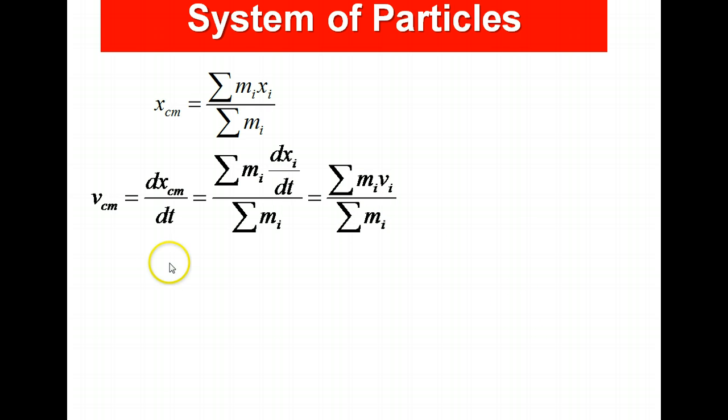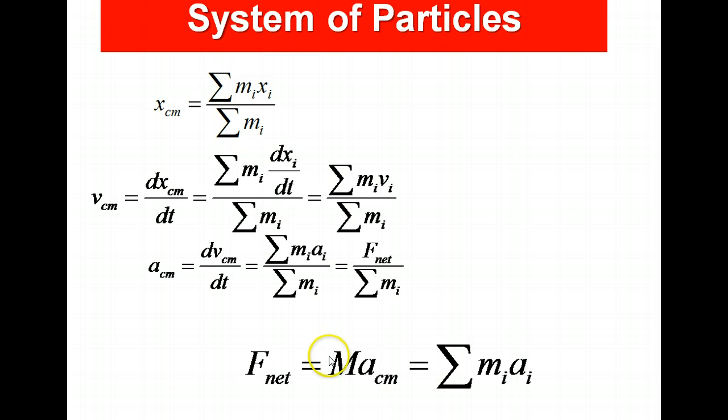I'm going to take the derivative again of both sides of the equation with respect to t. When I take dvcm dt, that will give me the acceleration of the center of mass. The derivative gives me m sub i a sub i, and this quantity, summation of m sub i a sub i, gives me the net force. So I get that acm is equal to the net force divided by the summation of the masses. I'm just taking this equation and I end up with an equation like this, where this capital M represents the sum of the masses of our system.